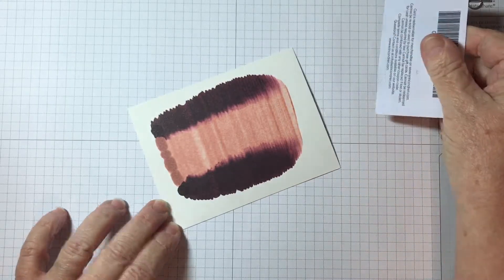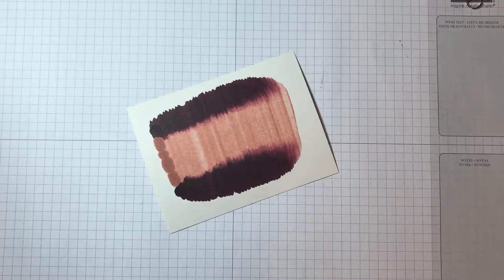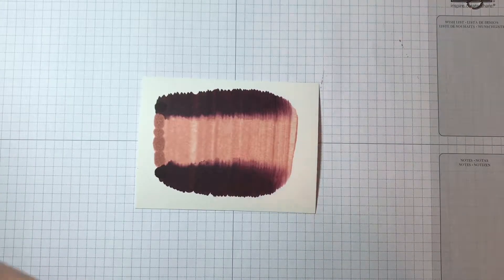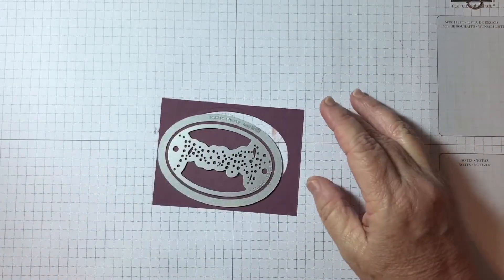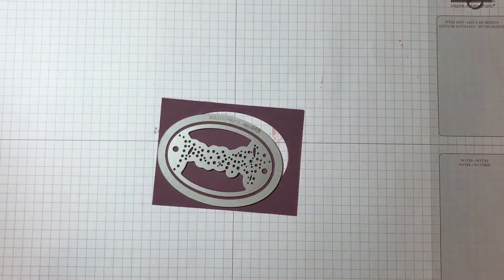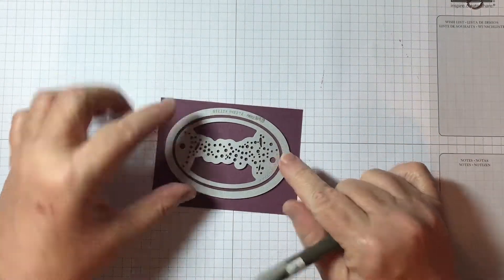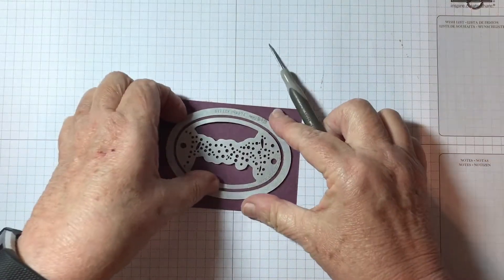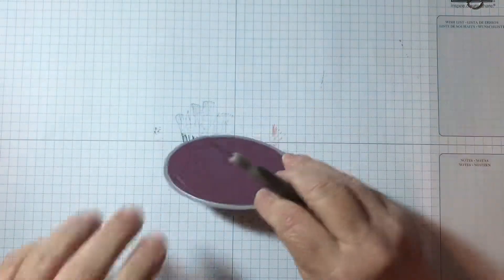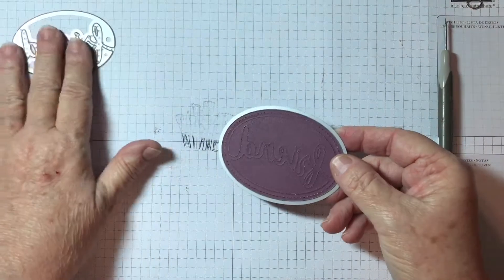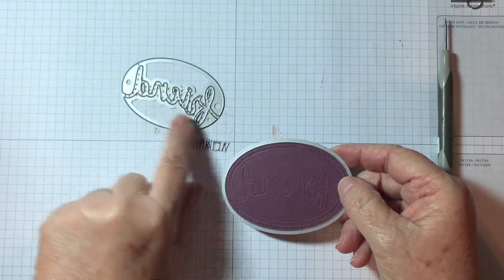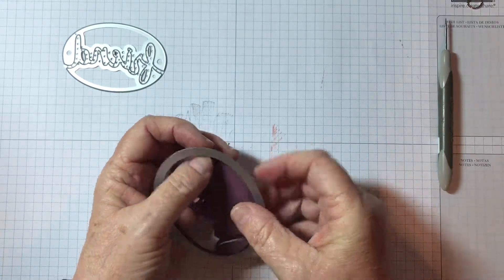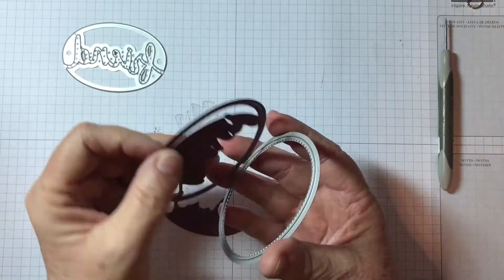Okay, so now we have our background done. Absolutely love that. Now to cut the friend out, what I have done—and I've already done this part—is I ran this through the Big Shot. This is a framelit using the Lovely Words die and this is the stitched framelit. I'm going to take that. I love how our oval shape here works with our oval framelits and the oval stitch shapes. So we're just going to go ahead and pull that out.